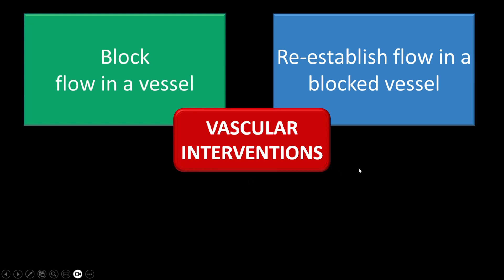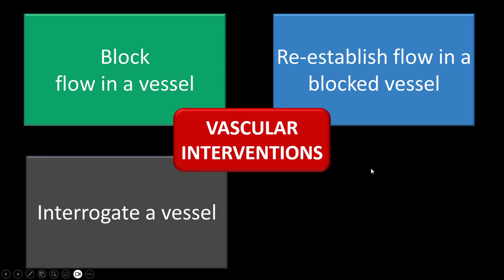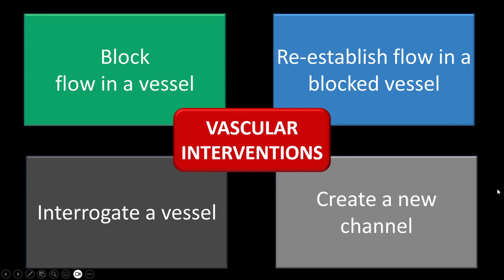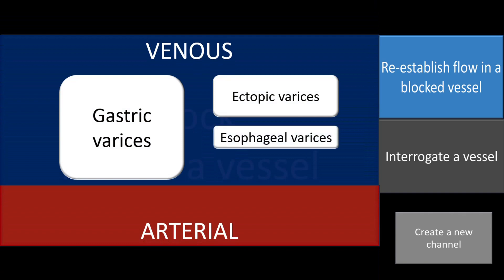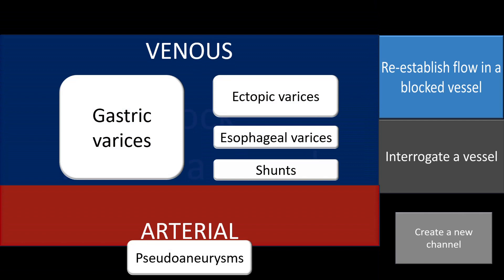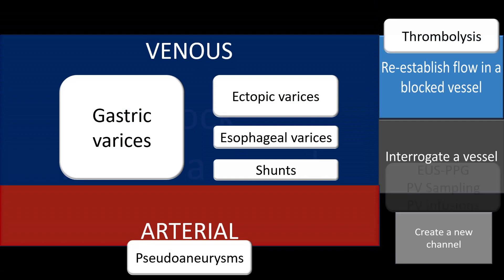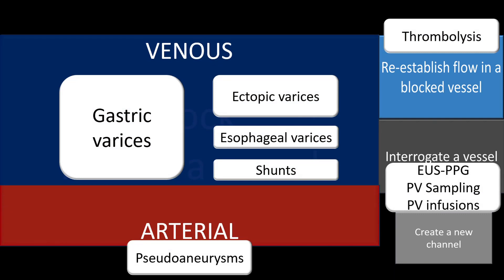We can use EUS to re-establish flow in a blocked vessel, interrogate a vessel and measure pressures, and even create a new channel. Most of this work involves blocking flow in a vessel — we can use it to block gastric varices, ectopic varices, and if required esophageal varices or shunts. We can block pseudo-aneurysms, and thrombolysis is extremely experimental. We can also use it for portal venous sampling and infusions. These are vessels that cannot be easily targeted percutaneously, and animal data suggests it can even be used for TIPS, though that is quite far from human use.